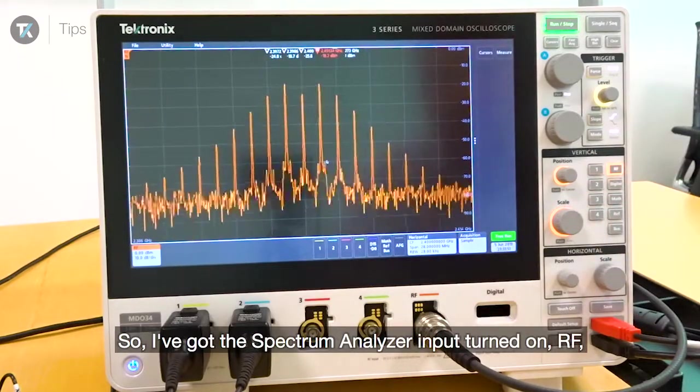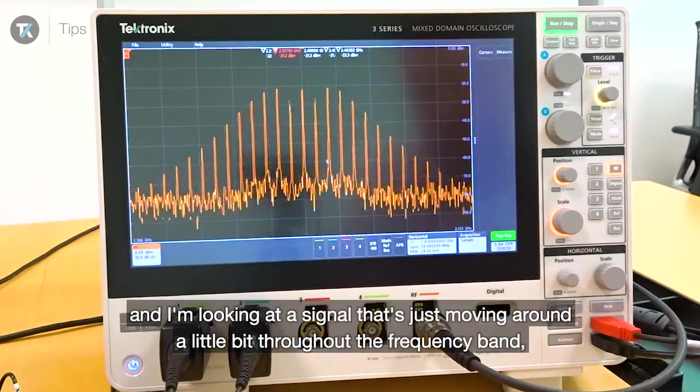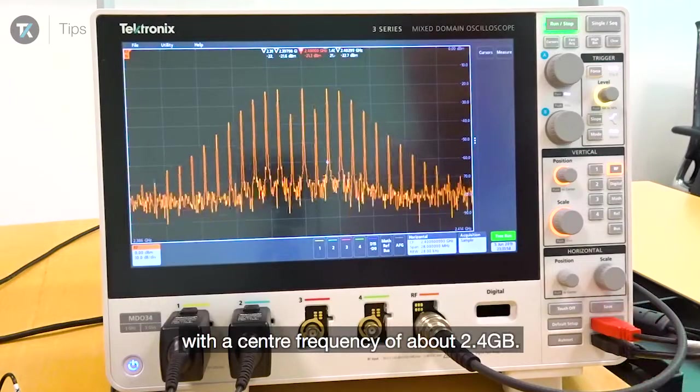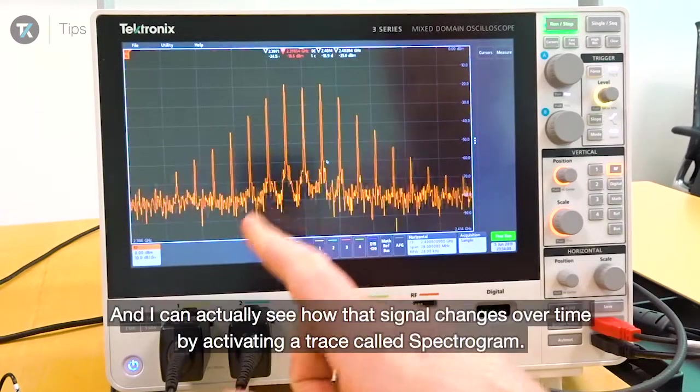I've got the spectrum analyzer input turned on RF, and I'm looking at a signal that's moving around a little bit throughout the frequency band with a center frequency of about 2.4 gigahertz.